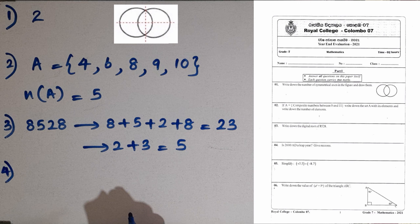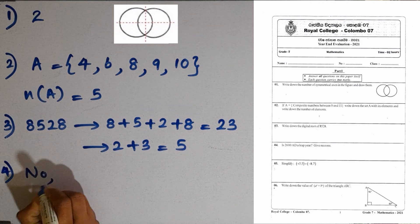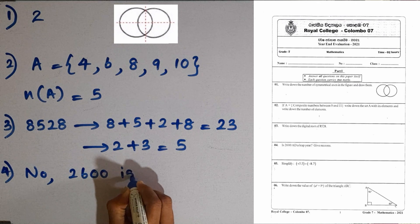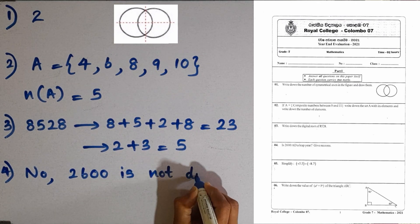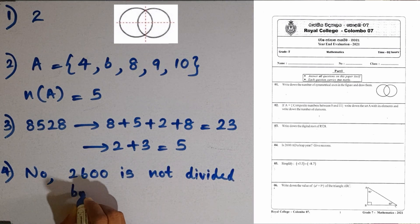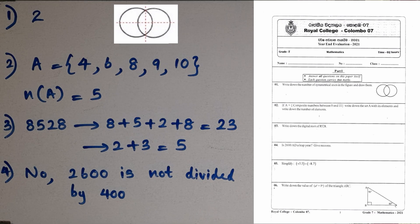Question number 4. Is 2600 AD a leap year? No. What is the reason for that? 2600 AD is not divisible by 400. In a year which is a multiple of 100, we have to check whether it is divided by 400. That's only it becomes a leap year.